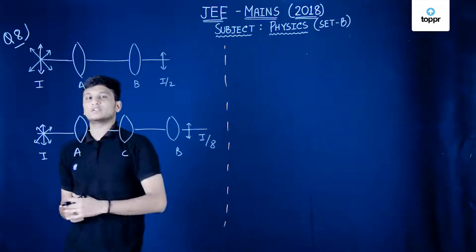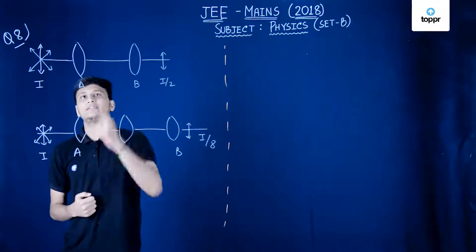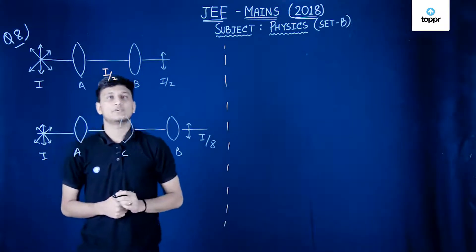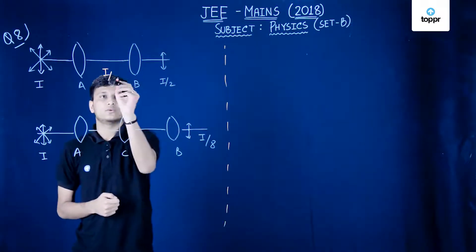So this was our unpolarized light. As soon as it passed through our polarizer A here, its intensity would be I by 2.